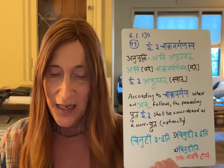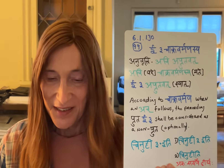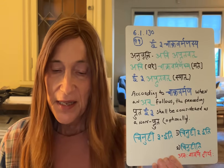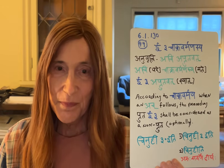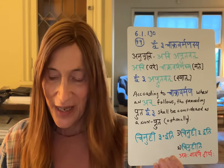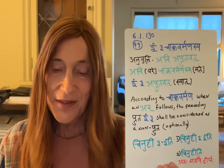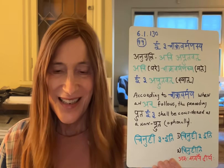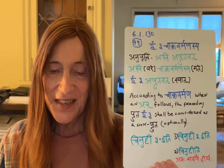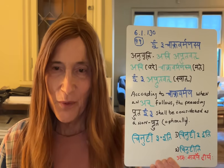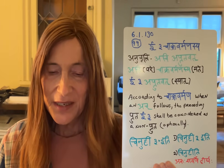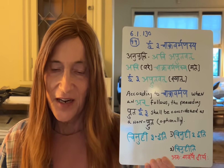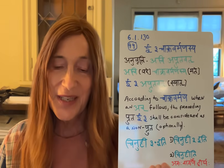Chinuhi iti has two options. One is that the pluta remains pluta, in which case we have prakriti pava, and it remains Chinuhi iti. The other is that the pluta is taken as if it were not a pluta, so we get sandhi and we get Chinuhi iti by Akasavarne dergaha — Chinuhi iti.